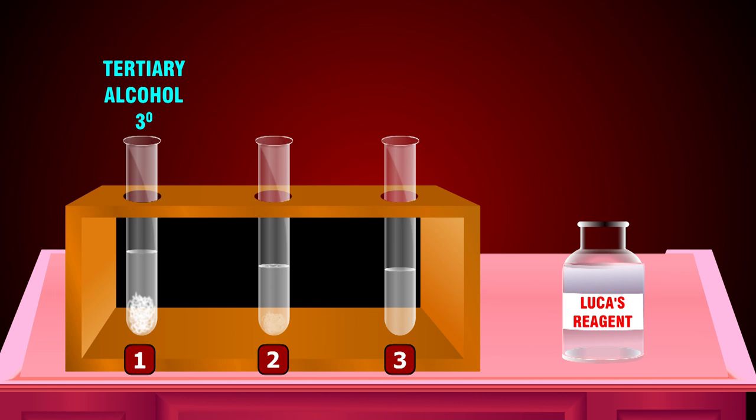In test tube number 2, turbidity appears slowly. This test tube contains a secondary alcohol.